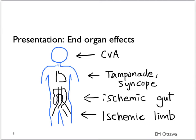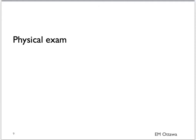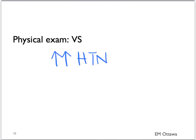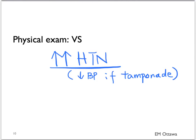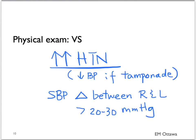We now move on to physical examination. We'll separate this into vital signs and specific end organ effects. On vital signs, the patient is usually hypertensive, with the exception that if they are in tamponade, then they will be hypotensive. However, for most patients, blood pressure would be high. Depending on where the flap is, there might be a difference between the patient's right arm and left arm blood pressure — usually more than 20 to 30 millimeters of mercury between the left and the right arm.